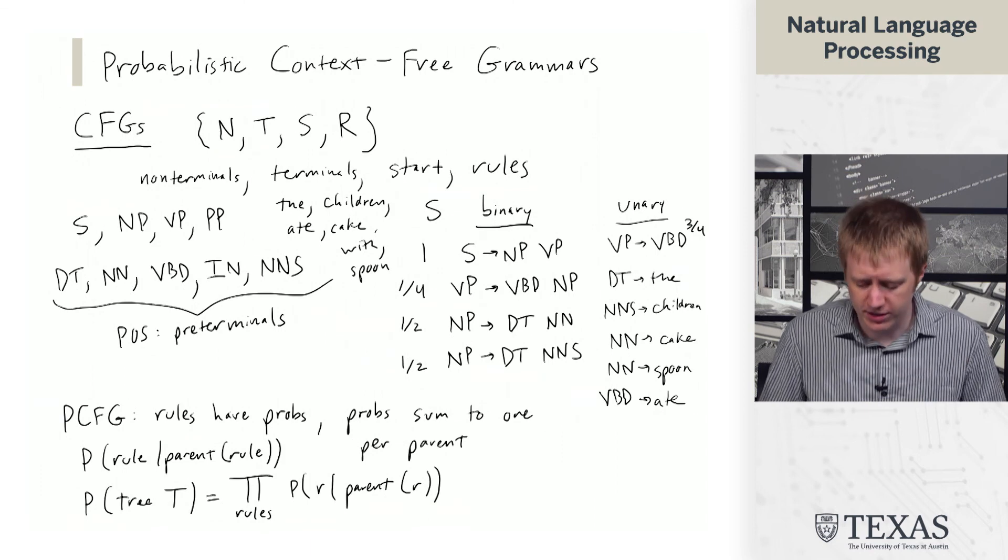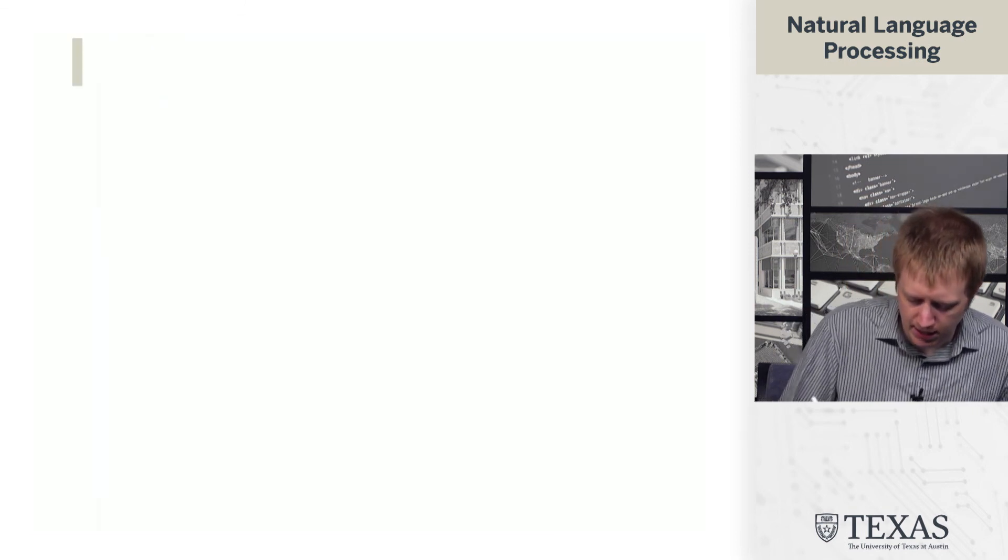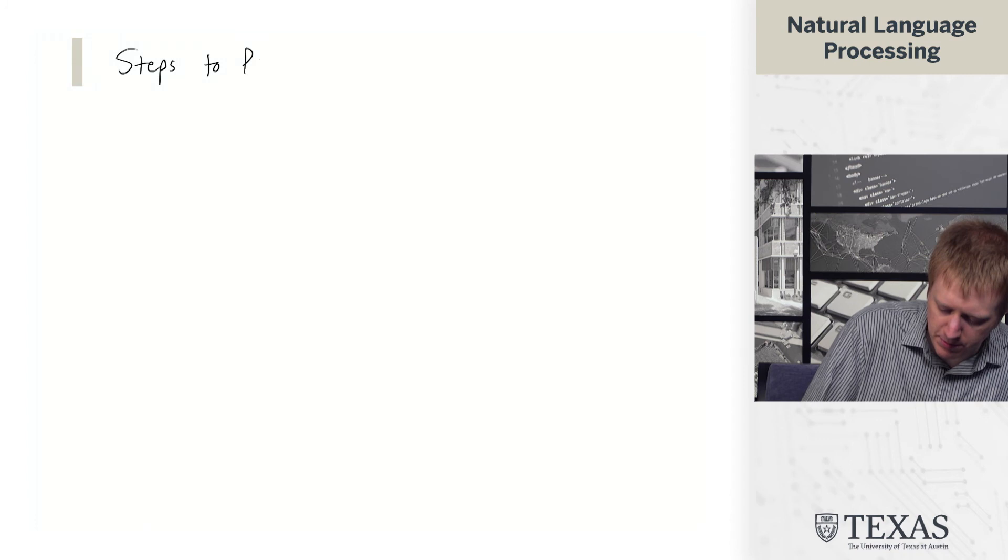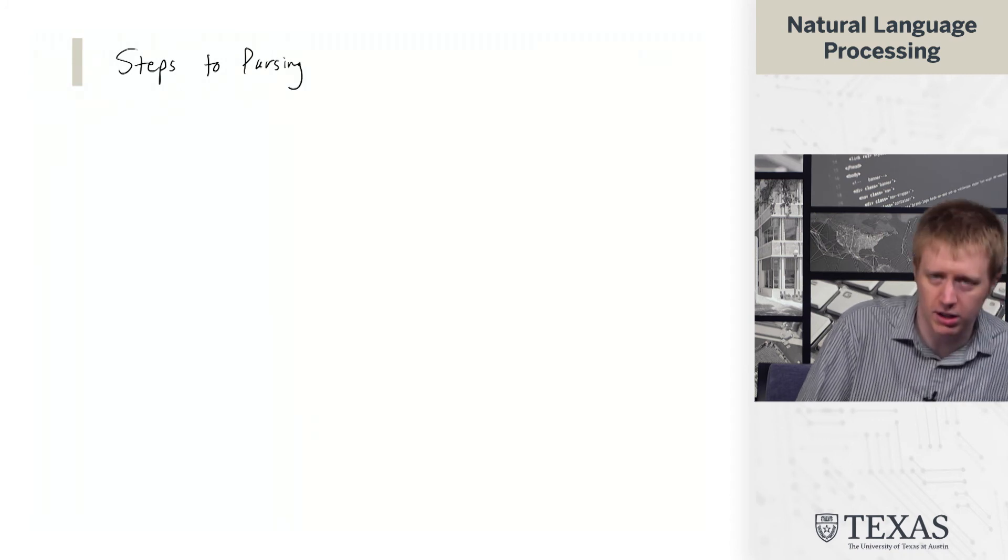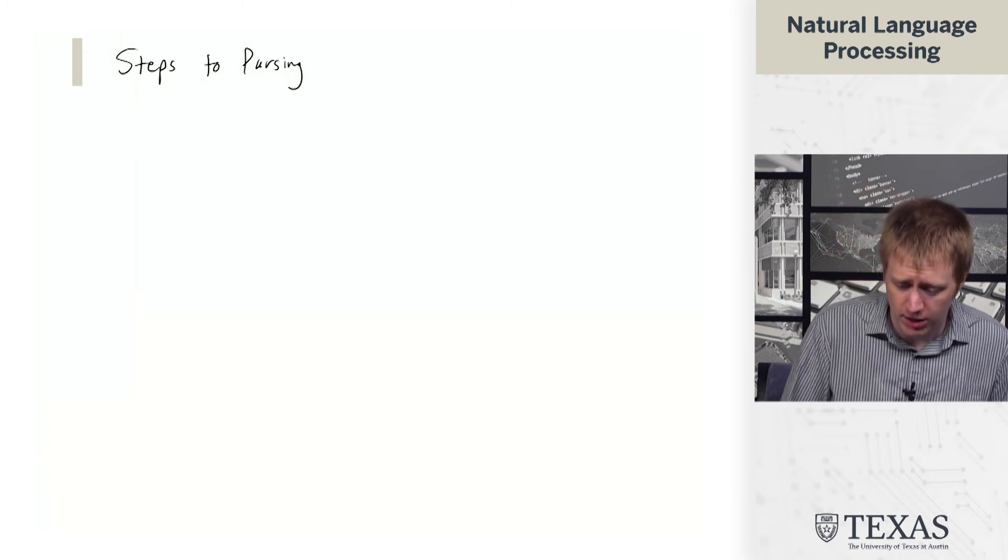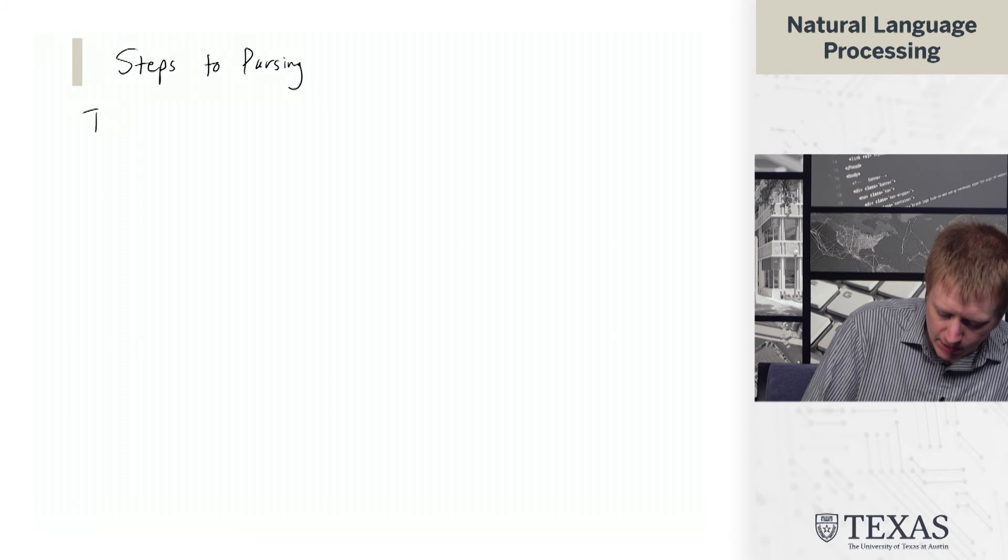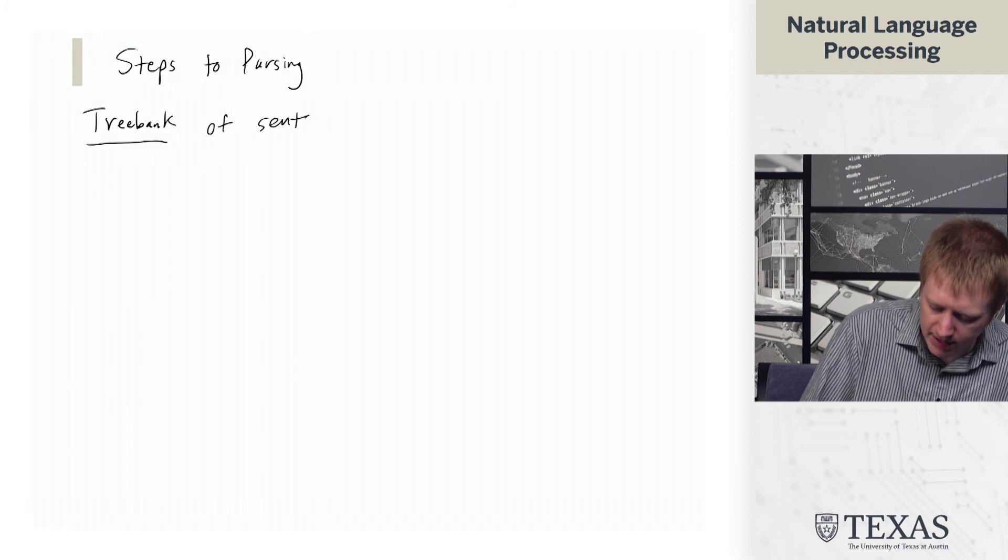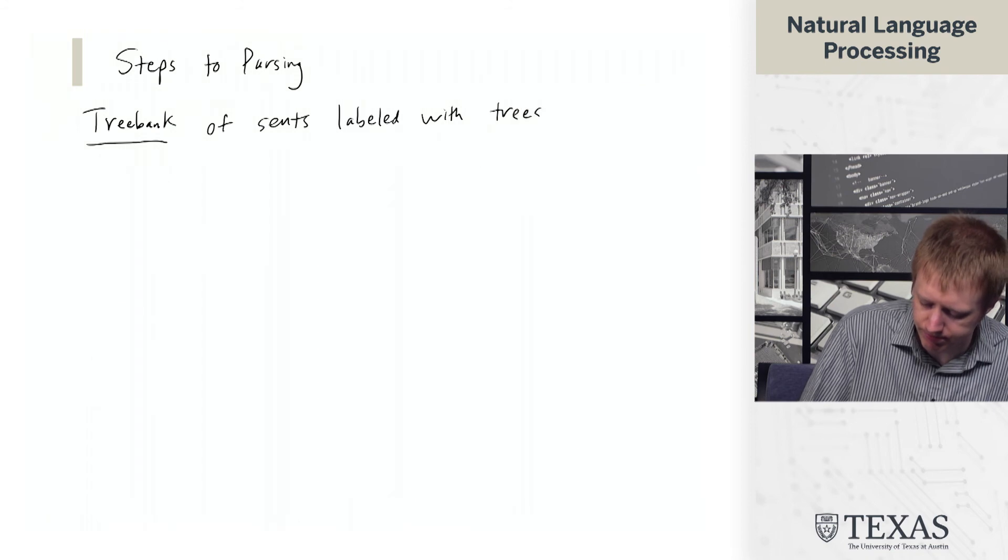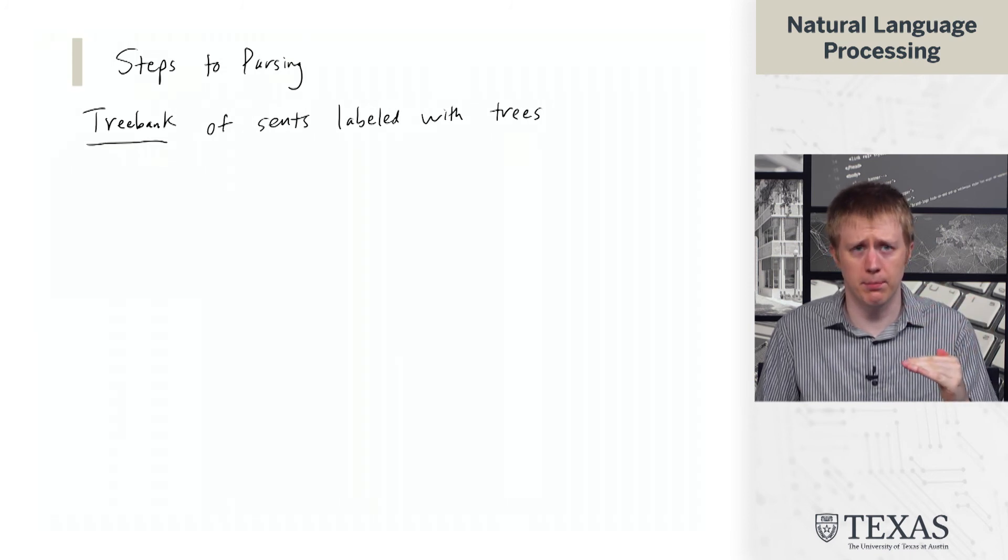The question is, where do these probabilities come from? We need a few steps before we can think about taking our probabilistic context-free grammar and doing parsing with it. Typically, we're given a treebank of sentences labeled with trees. We want to extract a grammar from this treebank, and then parse with this grammar.